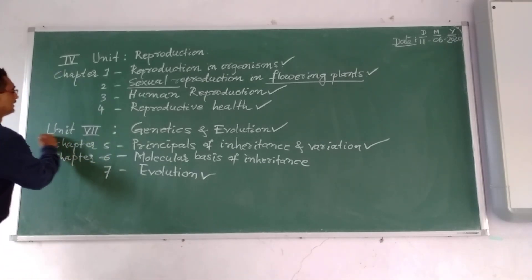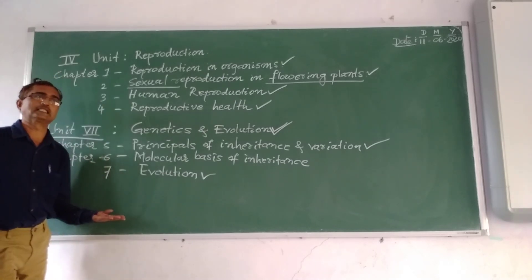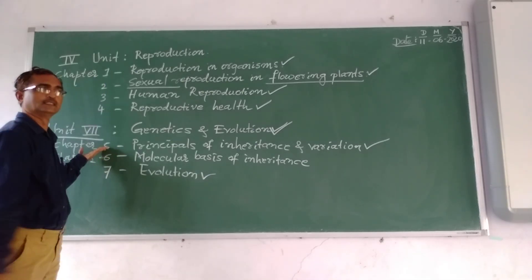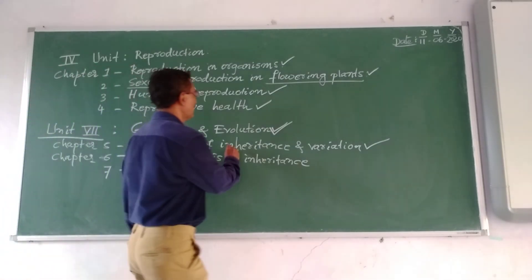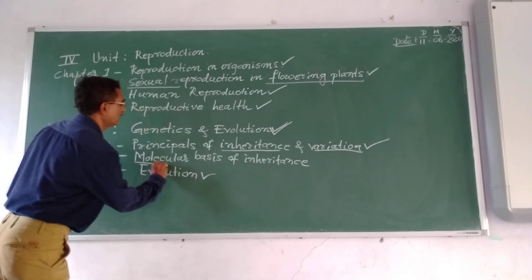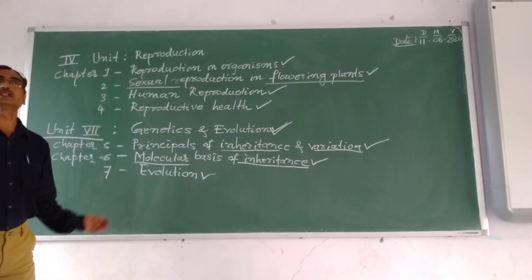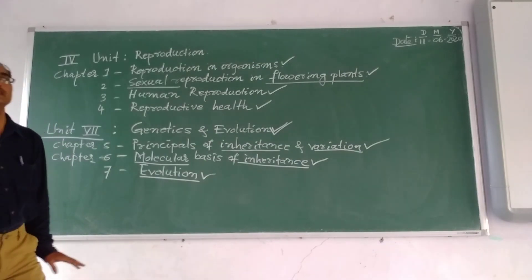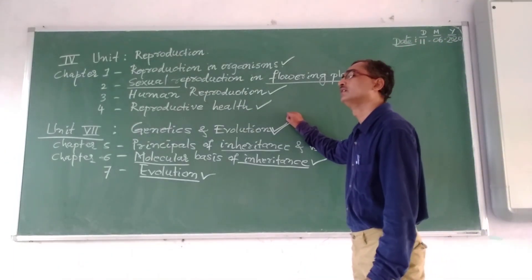This is the seventh unit that is all about genetics and evolution. In that, we are going to learn three different chapters: the fifth series chapter regarding the principle of inheritance and variation, the next chapter regarding the molecular basis of inheritance, and the third chapter in the seventh unit regarding evolution. These are the three chapters we are going to discuss in the seventh unit.